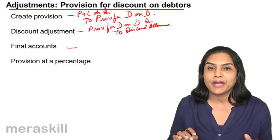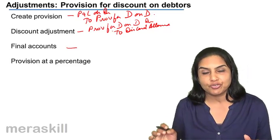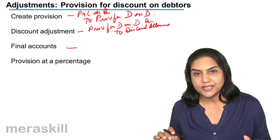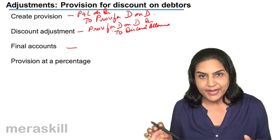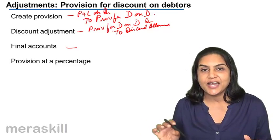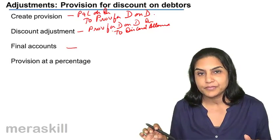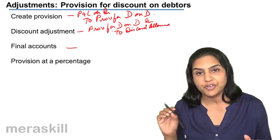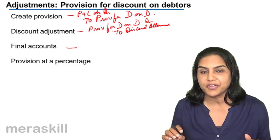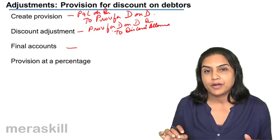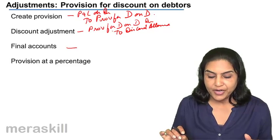In the balance sheet, as shown before, we show debtors less bad debts, less discount, less provision for doubtful debts if any, and less provision for discount on debtors.